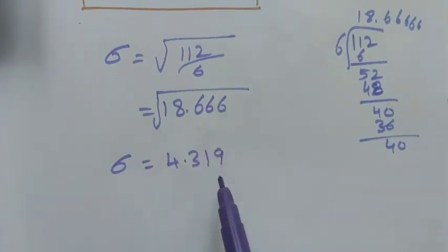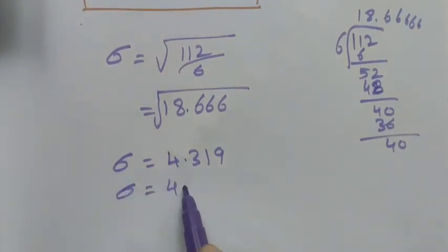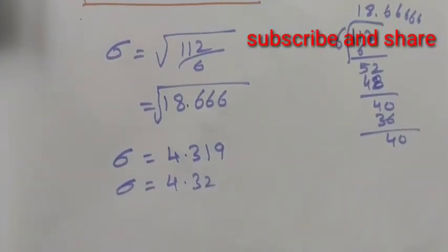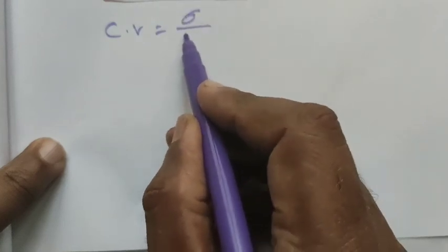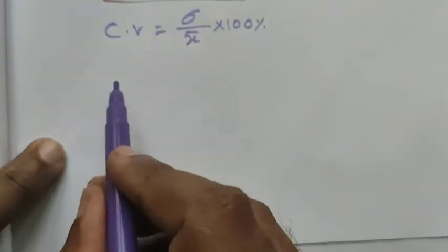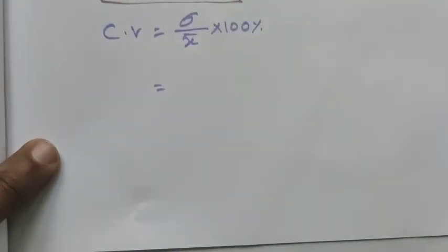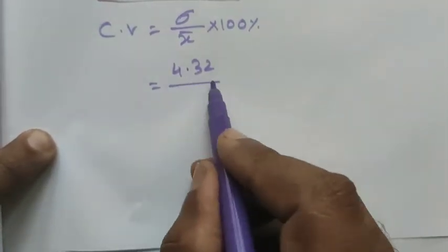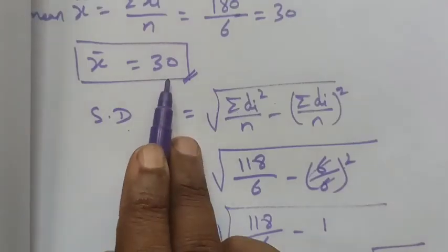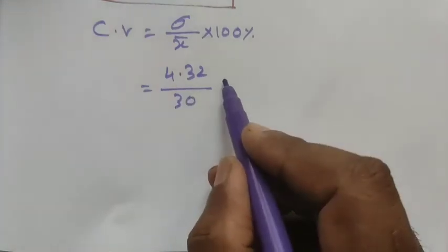So the standard deviation sigma is approximately 4.32. Now to find the coefficient of variation: CV equals sigma divided by x-bar into 100 percentage. Sigma is 4.32 and x-bar equals 30, so CV equals 4.32 divided by 30, into 100.